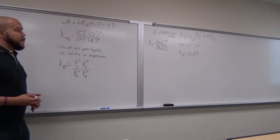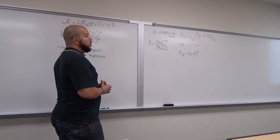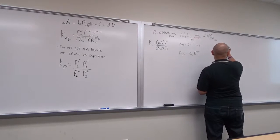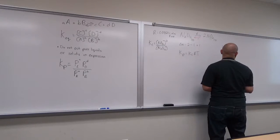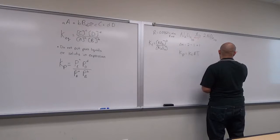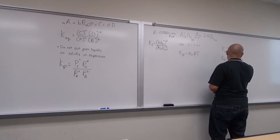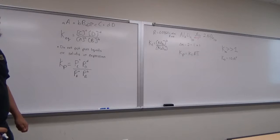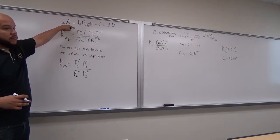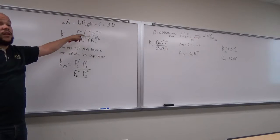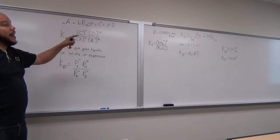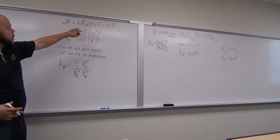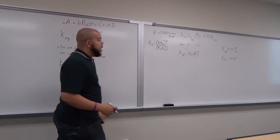Here's some basic fraction math that is very important to understand. If you have a Keq greater than 1 — say Keq = 1.0 × 10³ — then the numerator must be much larger than the denominator, which means that at equilibrium we're going to find mostly products.